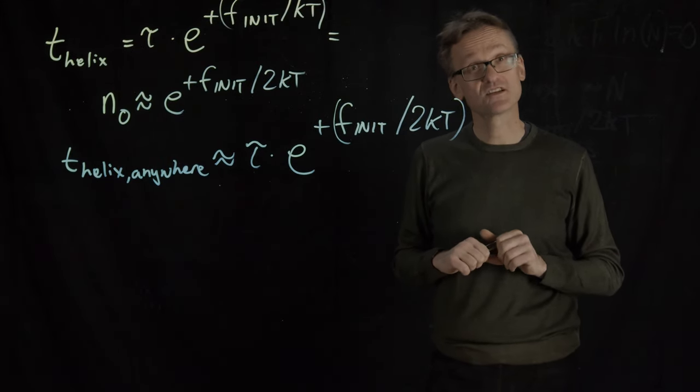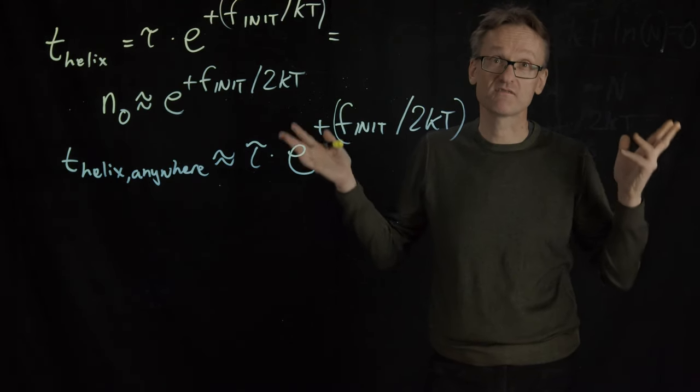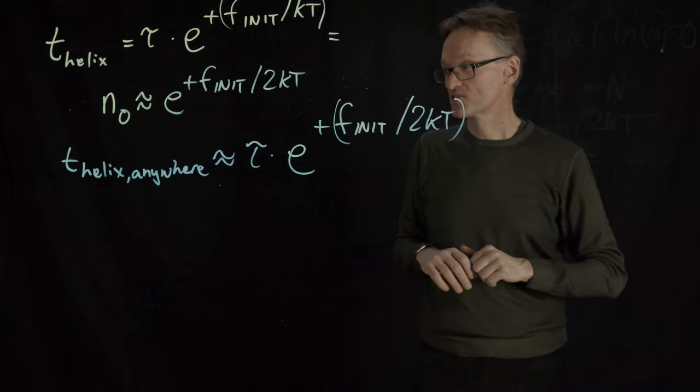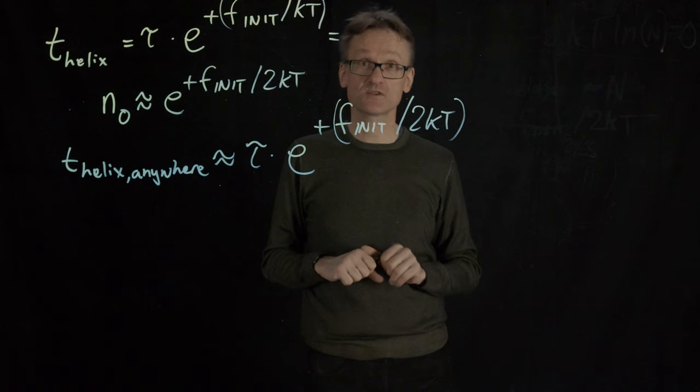The fastest helix formation might be in the ballpark of 100 nanoseconds and the slowest one might be a factor 100 or so slower. So even this super simple estimated kinetics rate turned out to serve us exceptionally well.